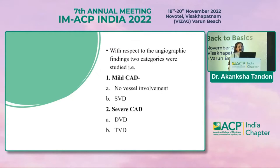With respect to these angiographic findings, patients were divided into two categories: mild CAD and severe CAD. Patients with no vessel involvement or single vessel disease were classified as mild CAD, while patients with double vessel and triple vessel disease were classified as severe CAD.